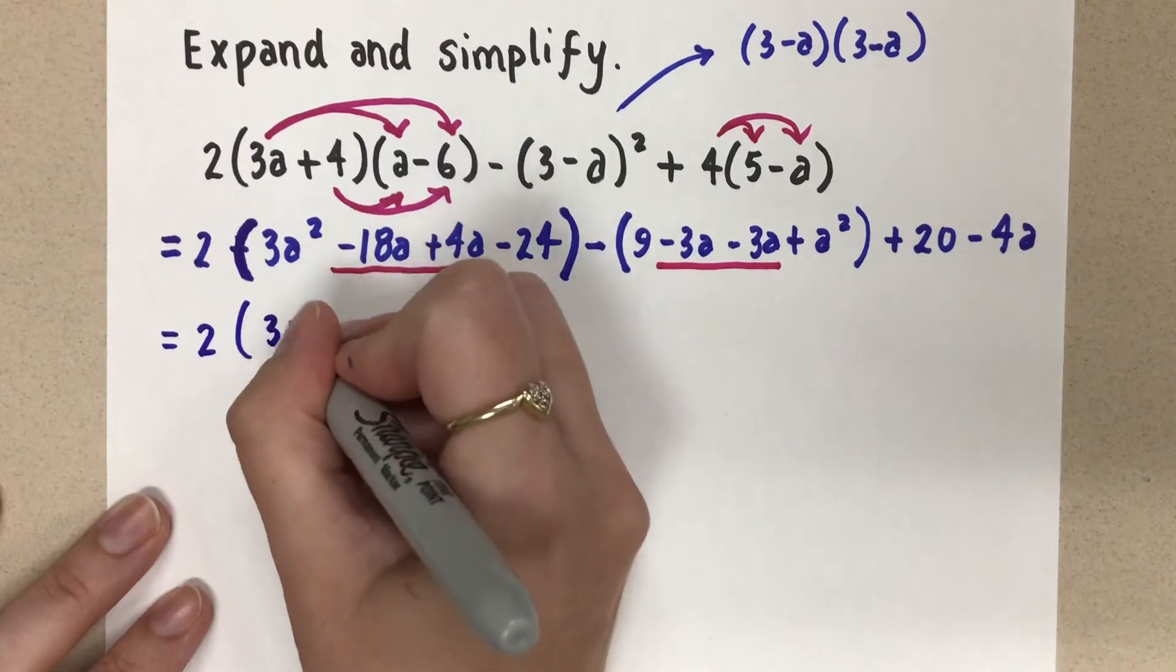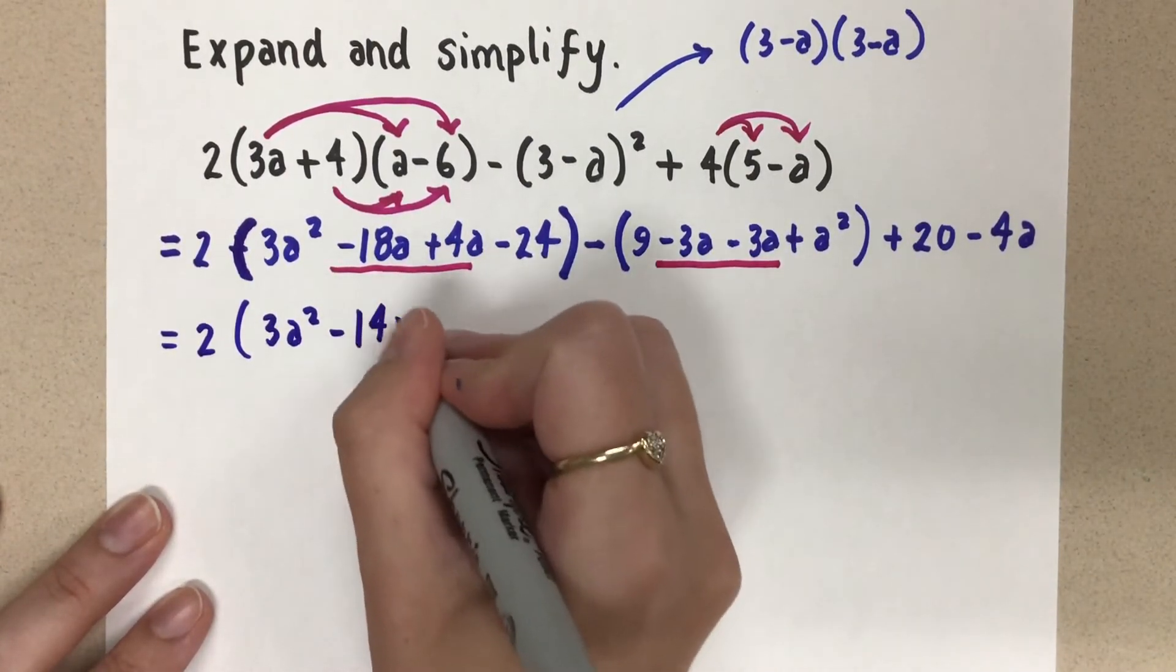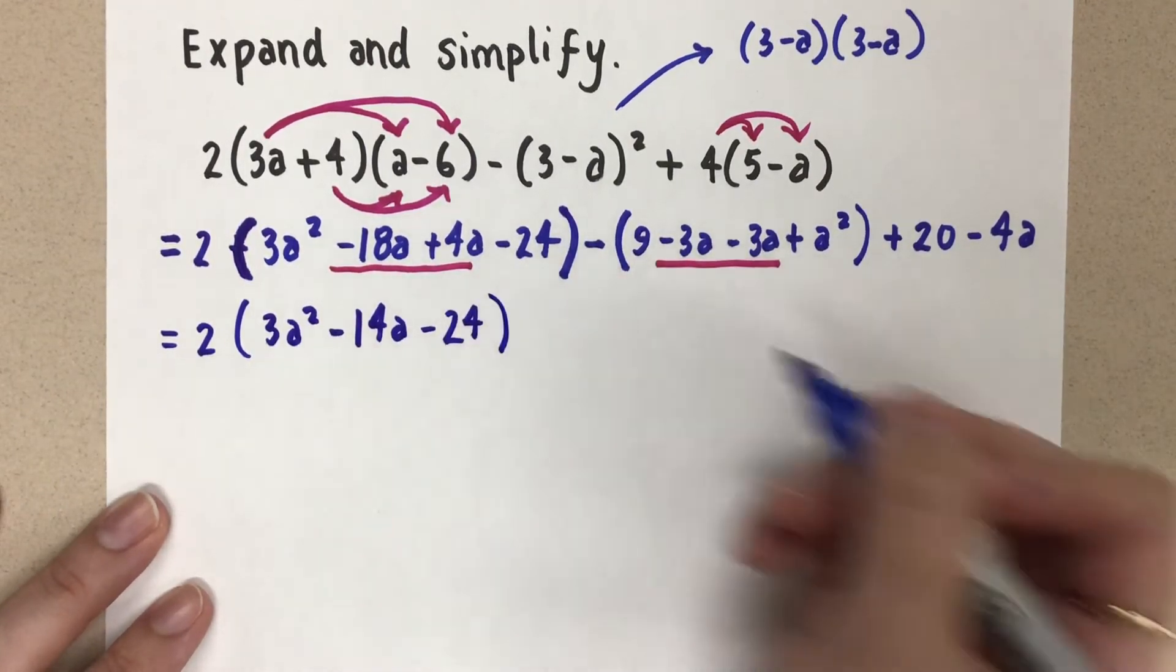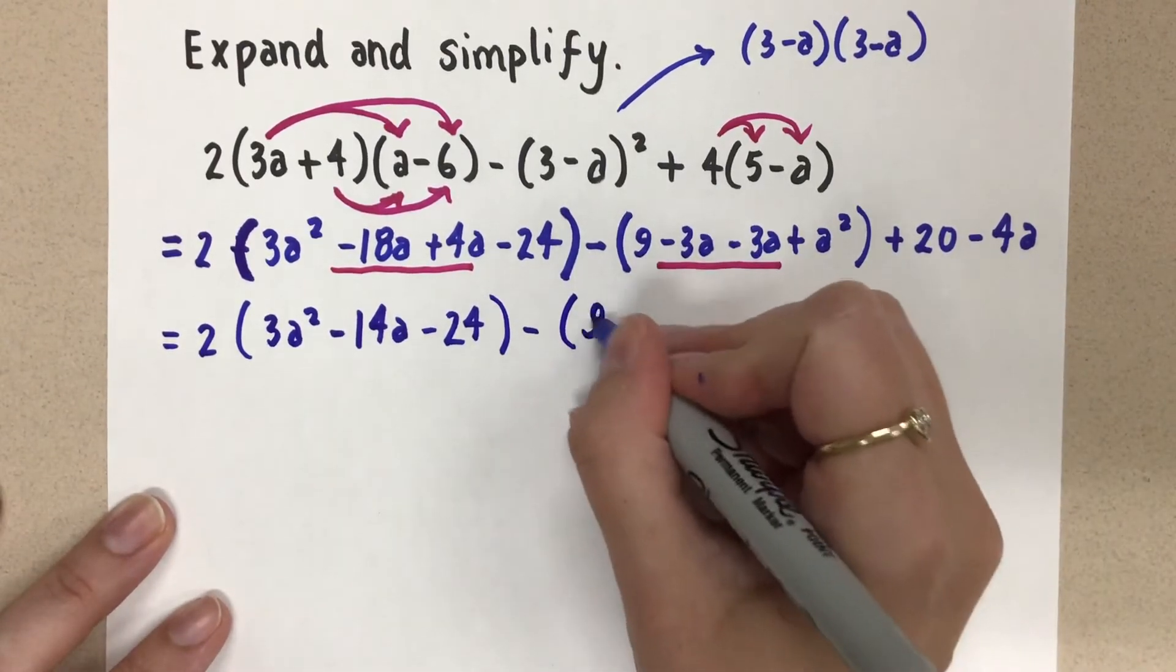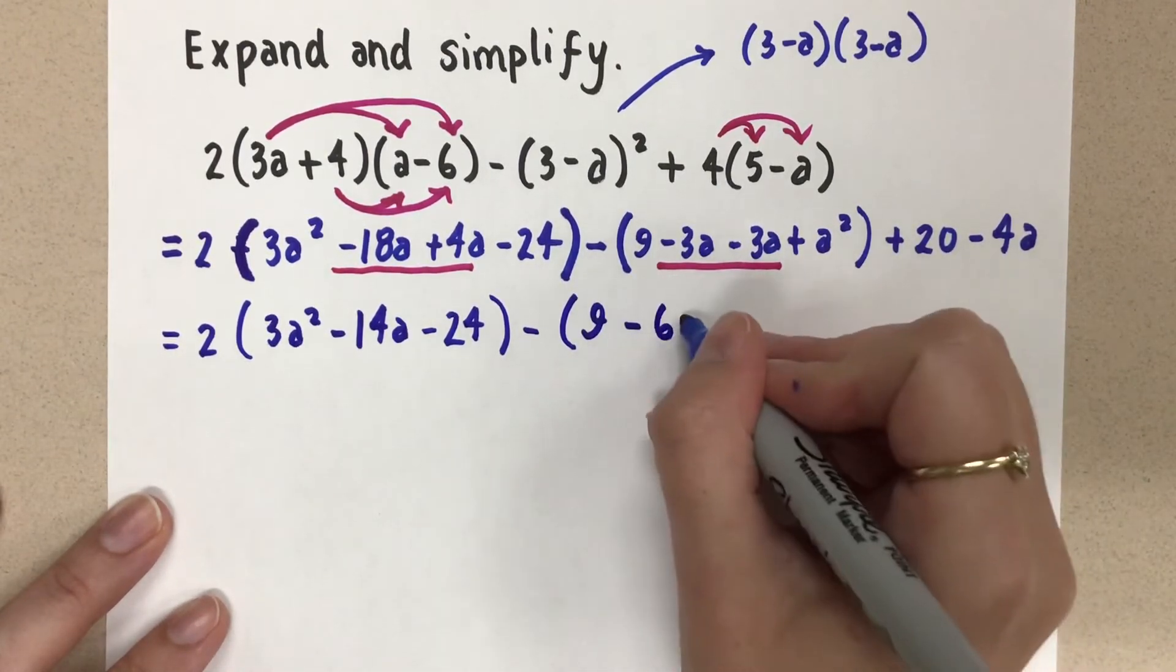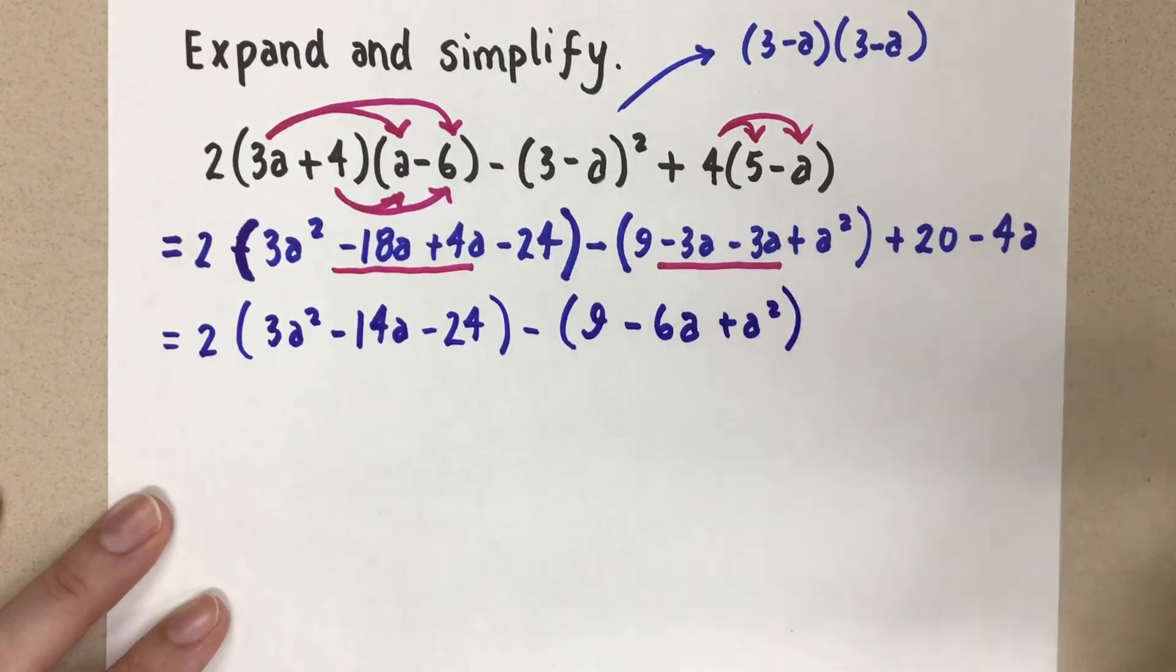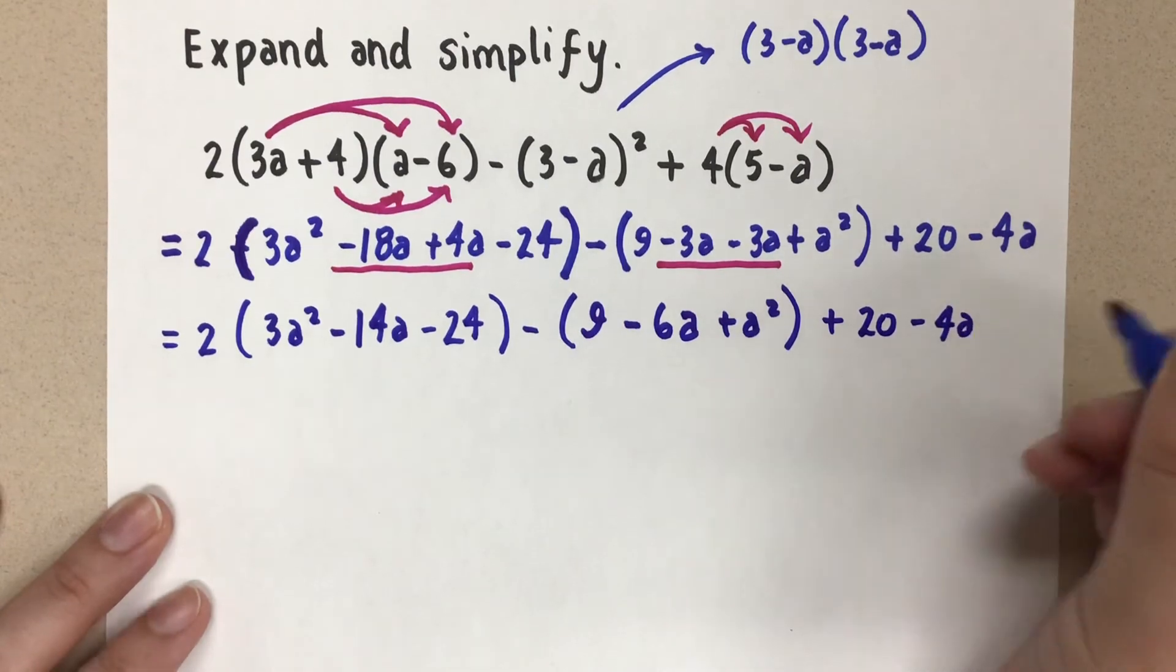So I'm going to wait on that distributing. And here, collect those like terms. So I'll have a minus 14a there. And then minus 24 like this. And then here, leave my minus and collect my like terms inside. That's going to have a minus 6a plus a squared. And we still have the plus 20 and the minus 4a at the end.